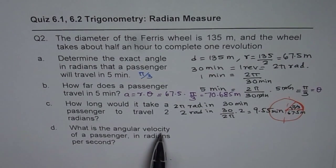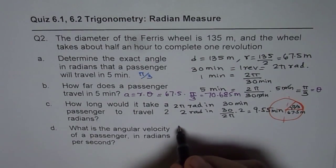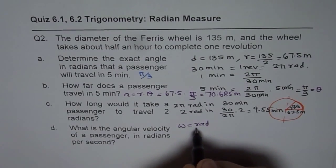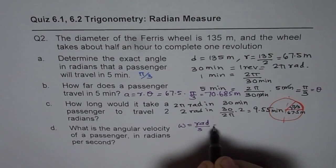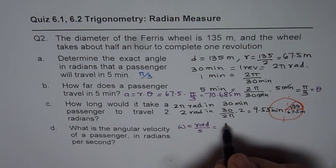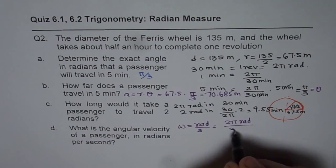What is the angular velocity of a passenger in radians per second? Angular velocity is radians per second we want. So angular velocity we need in radians per second. Now what we know here is it takes 2π radians in 30 minutes.